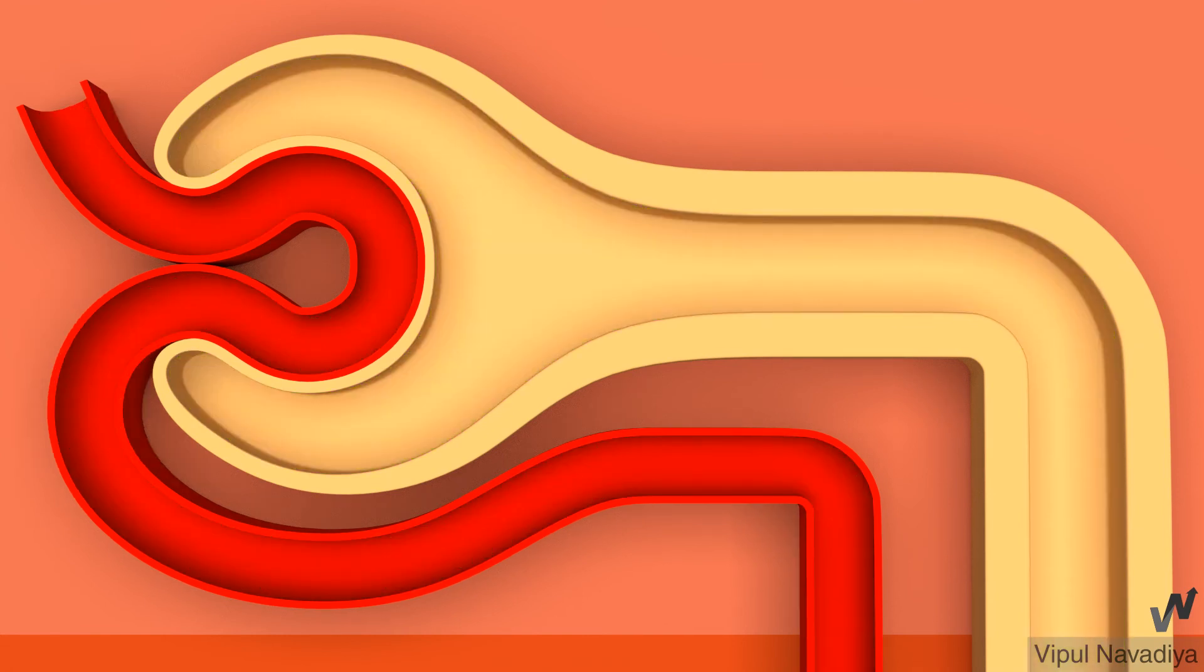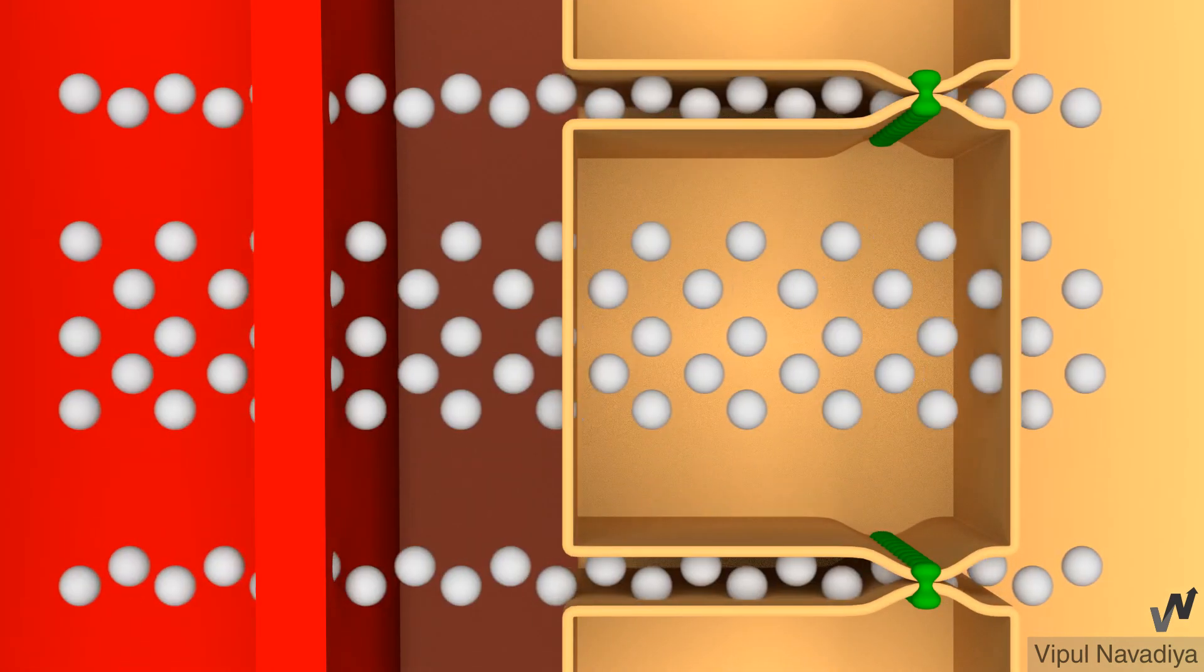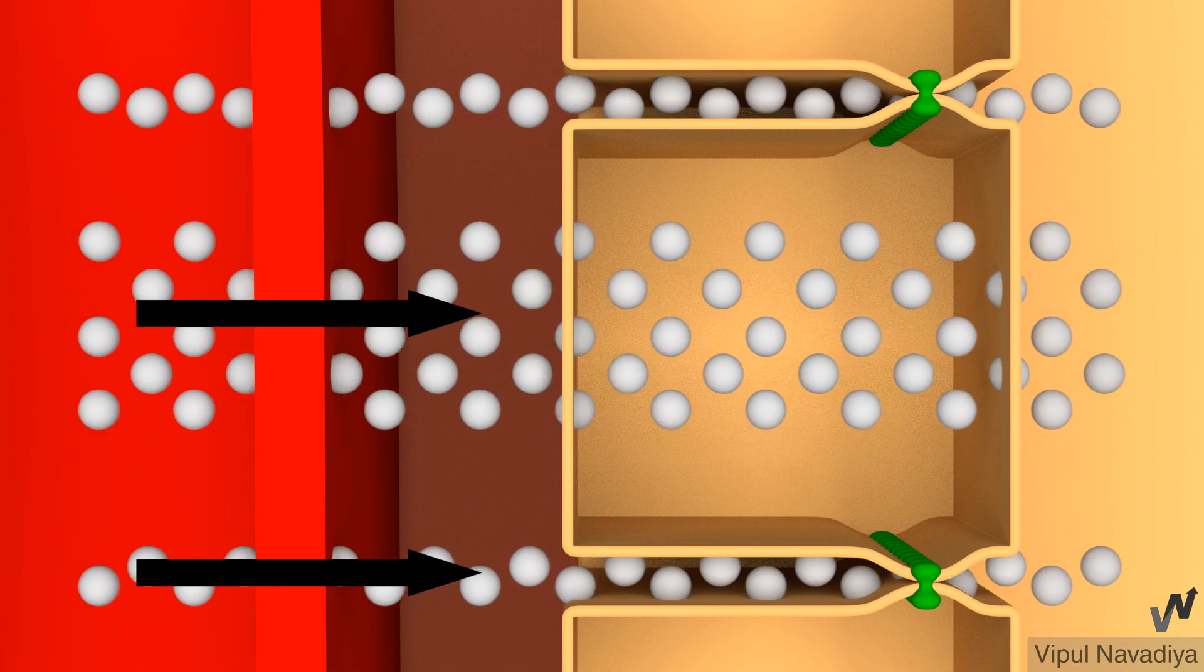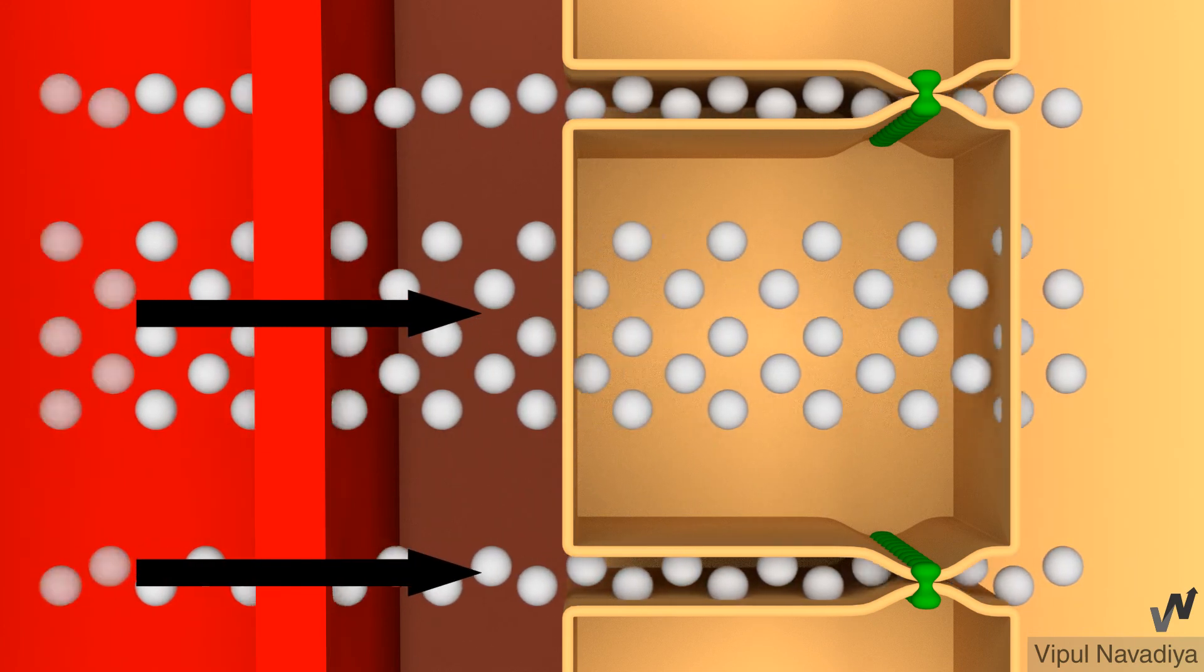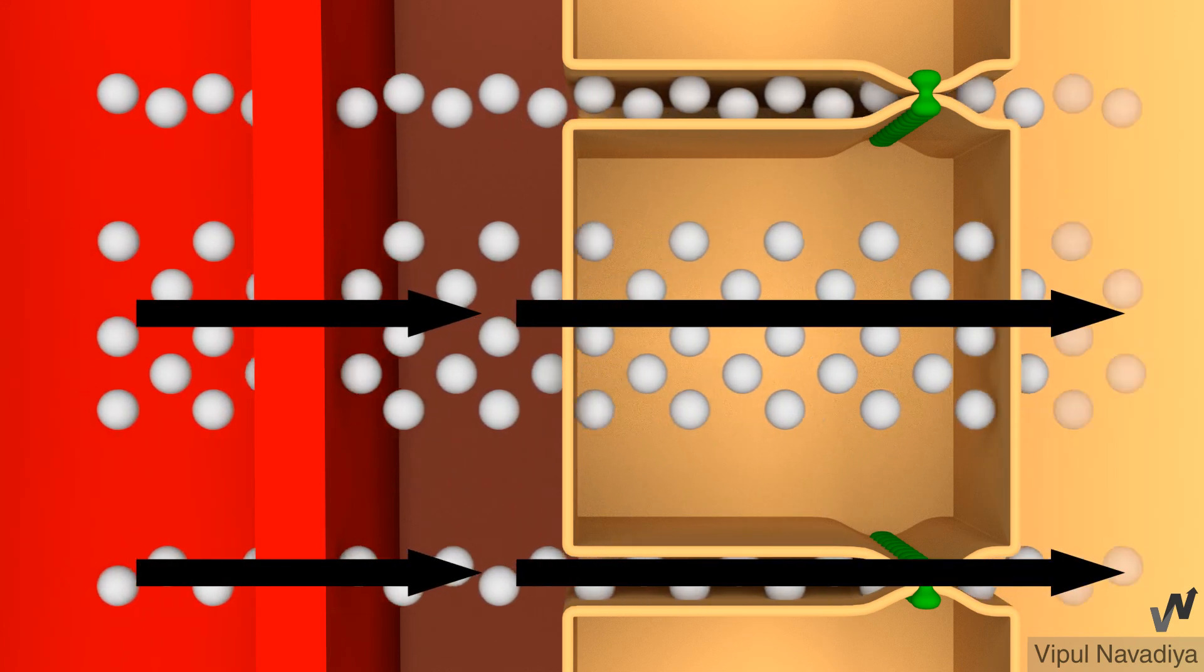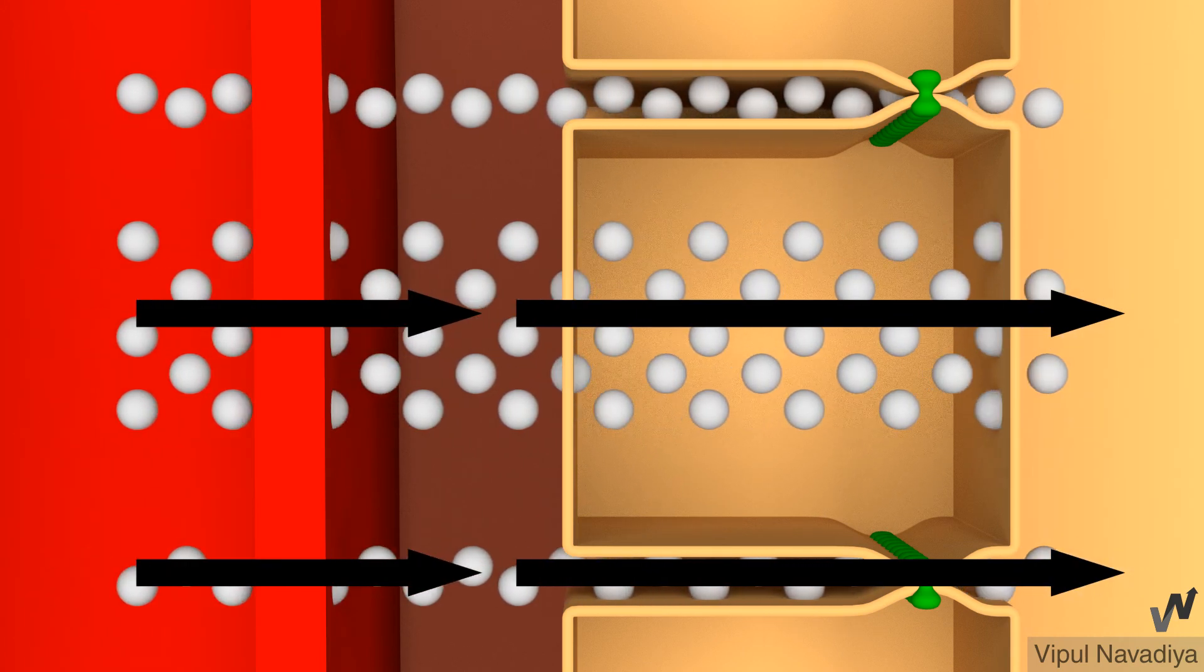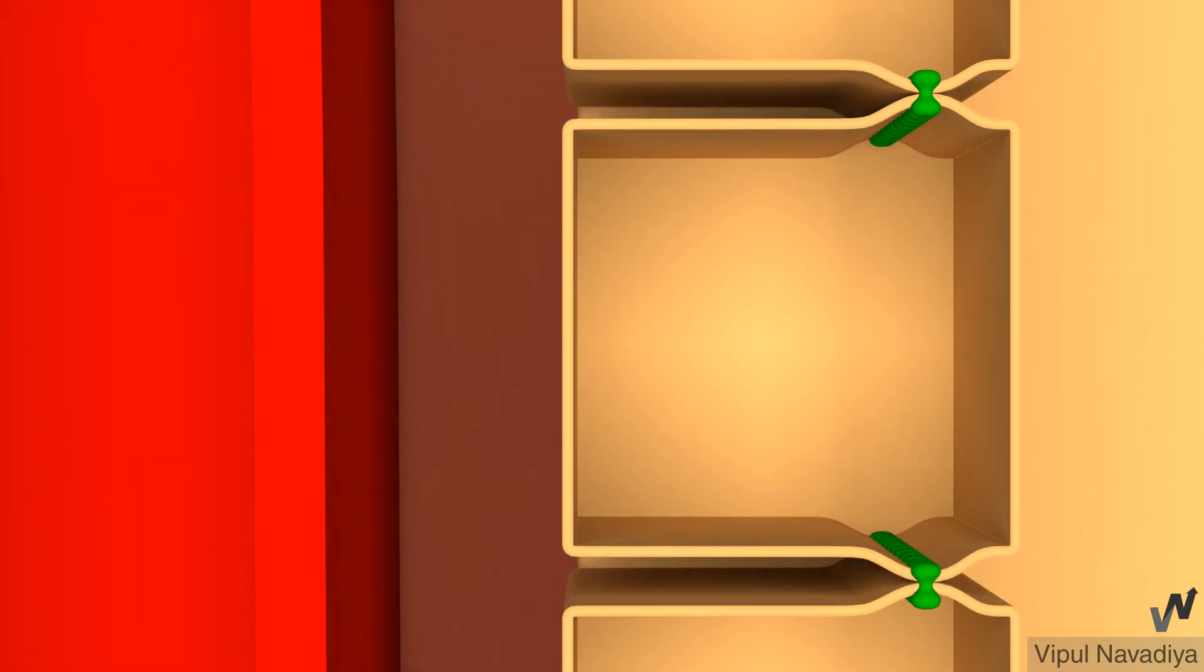So this was tubular reabsorption. Tubular secretion occurs in the same way but in opposite direction. Solute first moves from capillary into the interstitium and then from interstitium into the tubule by either transcellular or paracellular route. So these are some basics for tubular processing.